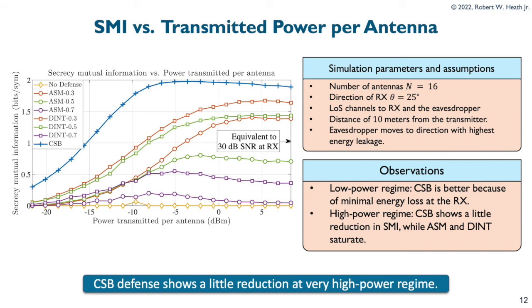Thus, in this slide, we also compare the SMI for different values of transmitted power. We can observe that in the low-power regime, CSB is better because the ASM and DINT methods are limited by the lower transmitted power. In high-power regime, however, we see there is a slight reduction in the SMI due to non-uniform distortion in the constellation along off-grid directions, while ASM and DINT saturates. However, for all practical scenarios of the received power at the eavesdropper, CSB defense is still better than ASM and DINT.